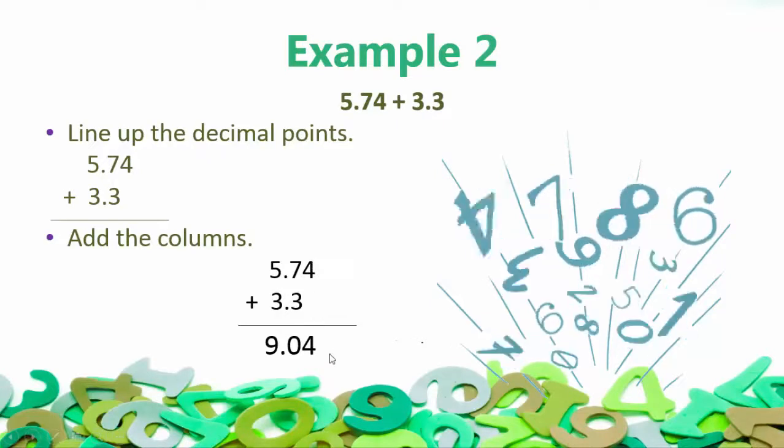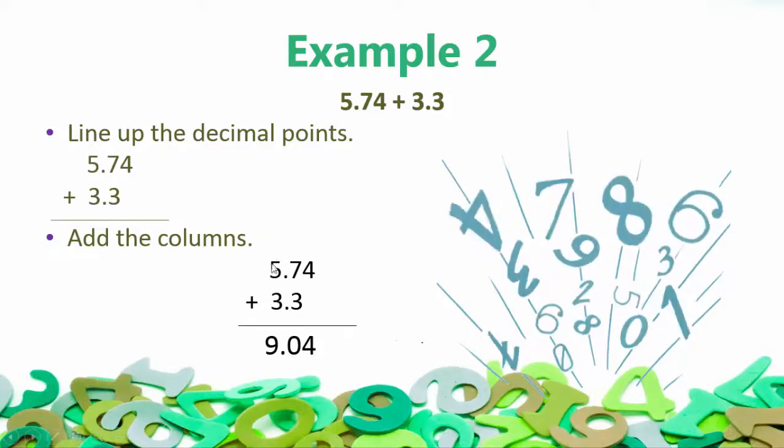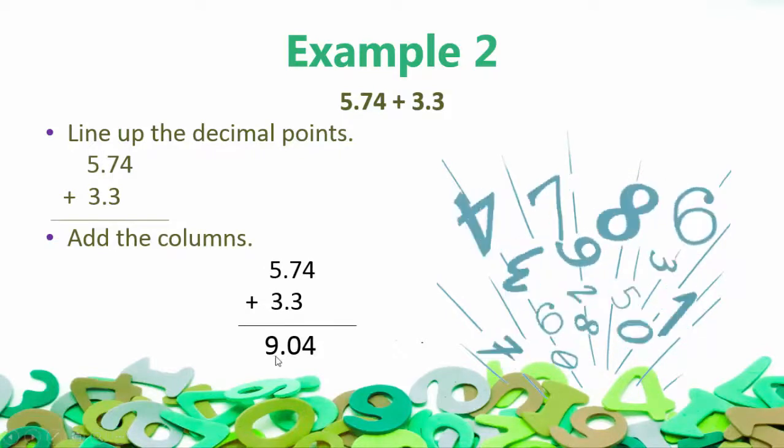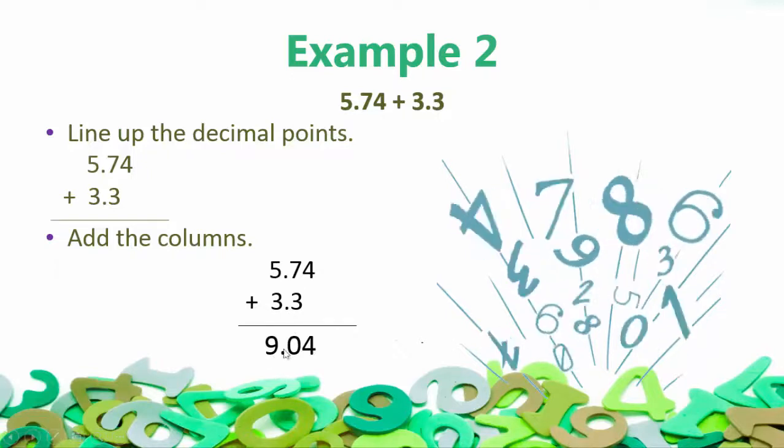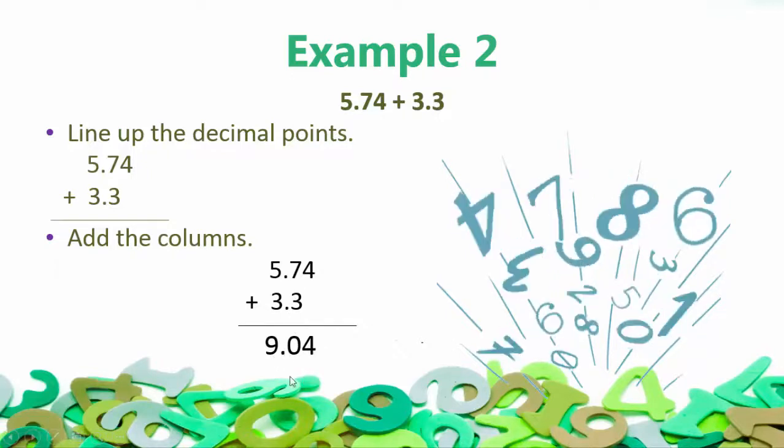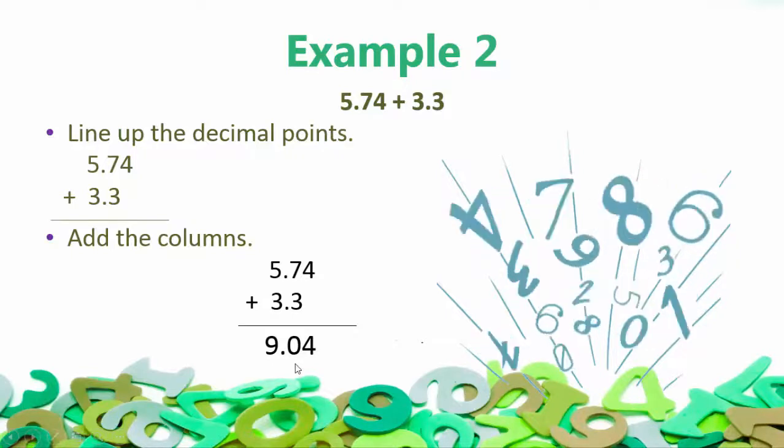And 4 plus 0 gives us 4. 7 plus 3 gives us 10. We carry the 1. 5, 1, and 3 gives us 9. And we bring down the decimal, lined up, and we get 9.04 as our final answer.